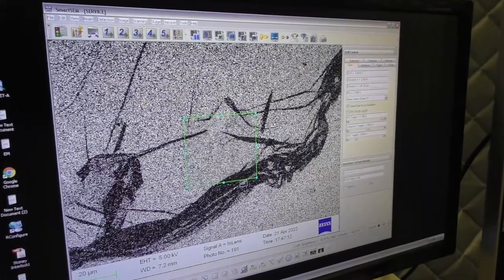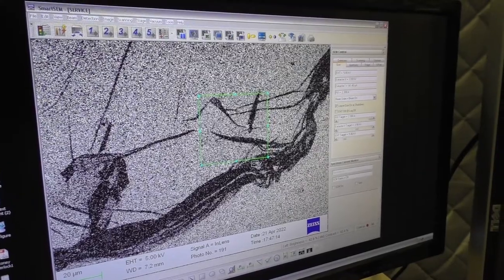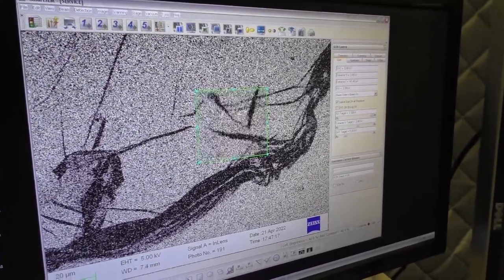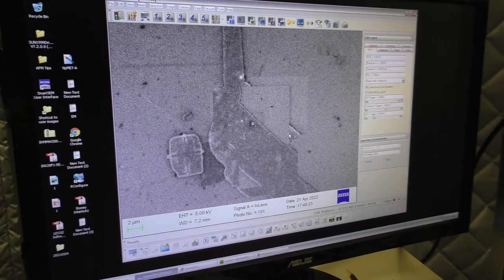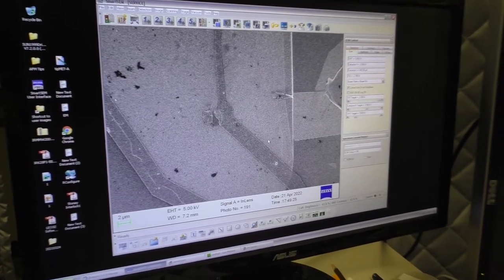To get a clearer view of the sample, we need to fine-tune the beam by making it point-like and focusing precisely on the sample surface. After some fine-tuning, we get a nice clear image.